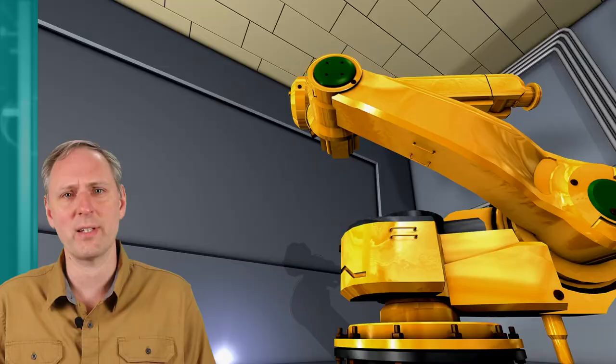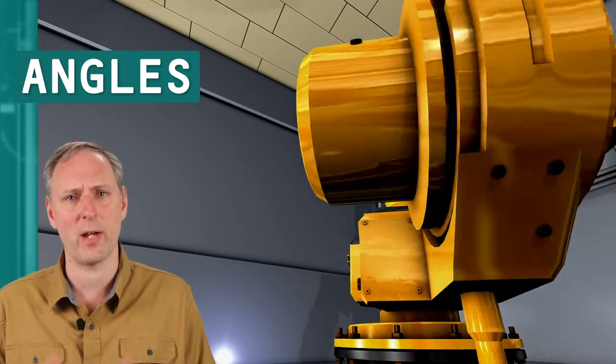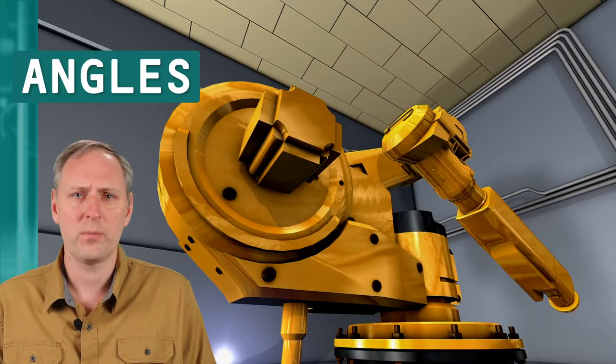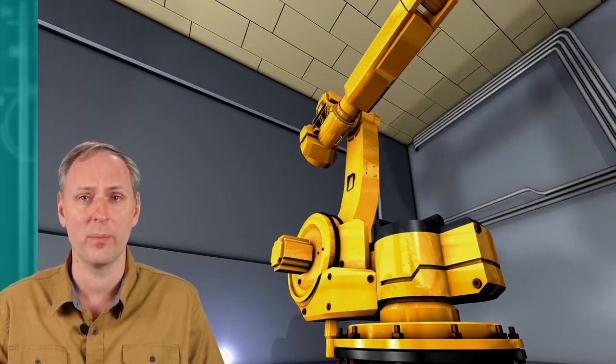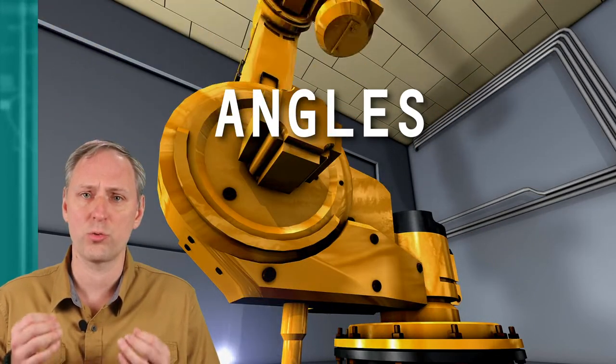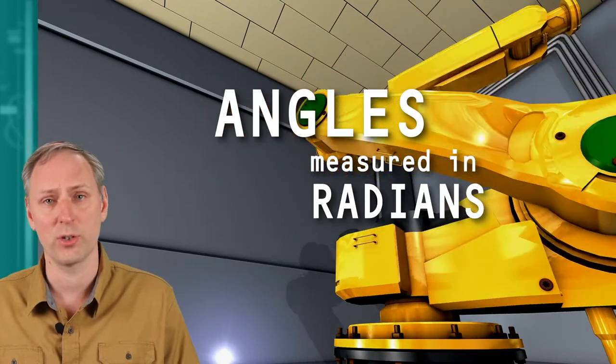Besides measuring distances, robots often have to measure angles as well. For example, they may have to measure the angle of the robot's arm. In this case we use radians, rather than using degrees.